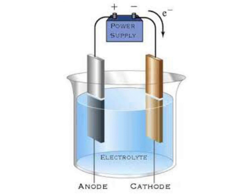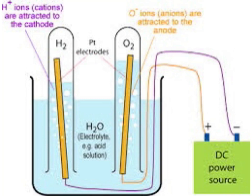In this module we will discuss the applications of chemical effects of electric current. Chemical effect of electric current is used in electrolysis, that is breaking down of any electrolytic solution into its ions, and in electroplating. Electroplating is the deposition of a superior metal over a cheaper material. We will discuss these phenomena in detail in this module.